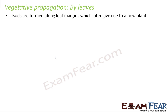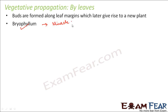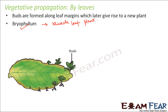Vegetative propagation by leaves is not very commonly seen in plants, but there are certain plants where buds are formed along the leaf margins, which later give rise to new plants. An example of such a plant is Bryophyllum, which is also known as the miracle leaf plant — not because it is a miracle, but because this phenomenon is not seen in the leaves of most other plants.